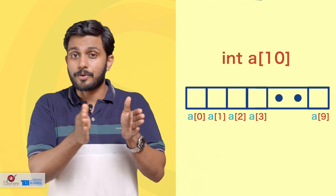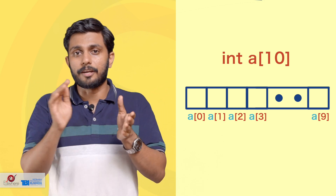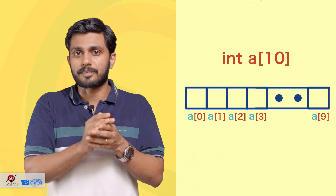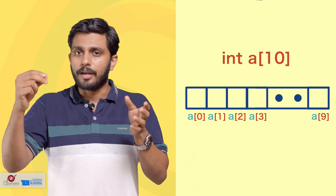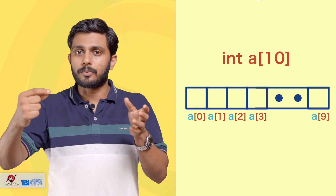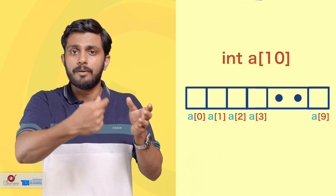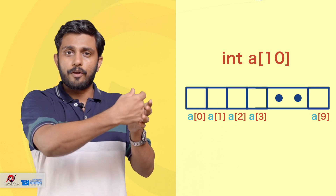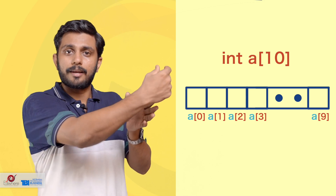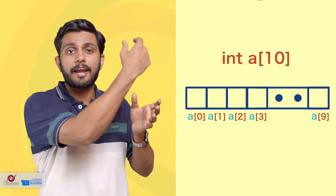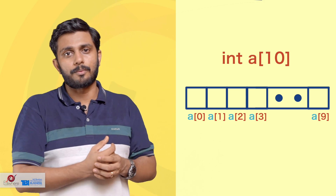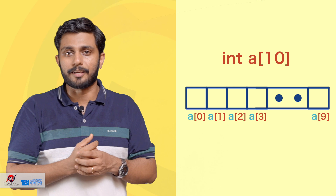So we have to continue with the naming of this. We use A[0], A[1], A[2], A[3], all the way through A[9].